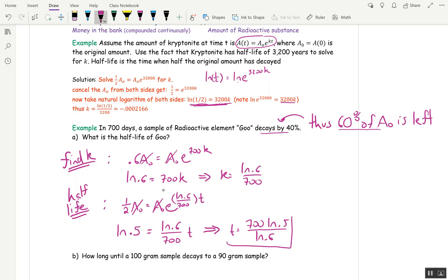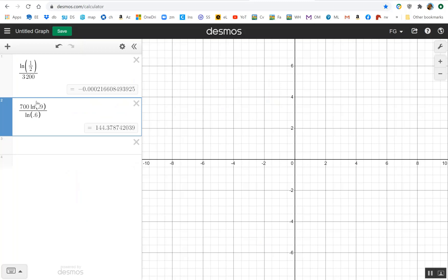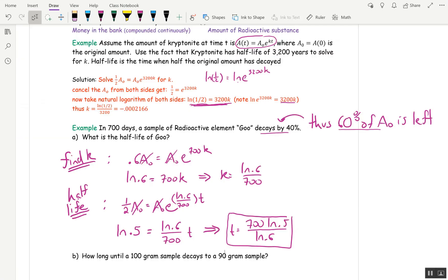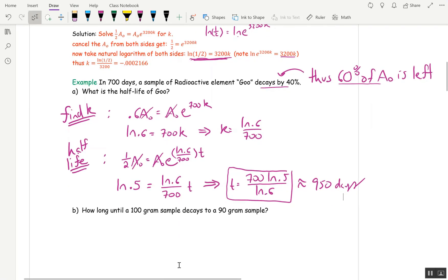Now, on a test, I'm perfectly happy with that answer. My open math is going to want you to, they'll tell you how many decimals they want. But let's see, I had a 0.5 here. 0.5. That's 949.8 days. So if we're rounding to the nearest day, that would be 950 days. Okay.